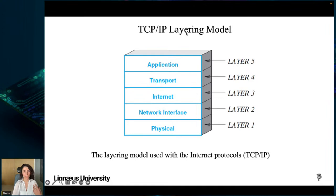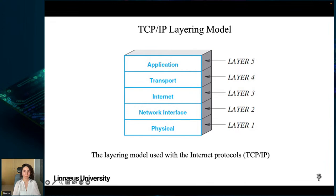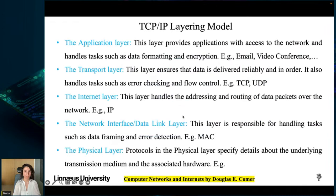The TCP/IP layer model consists of five layers, though layers 1 and 2 are often merged, making it four. At the top is the application layer (layer 5), then the transport layer (layer 4), the internet layer (layer 3), the network interface or data link layer (layer 2), and the physical layer (layer 1). The network interface layer is also called the data link layer — or MAC layer, since MAC is a key protocol of that layer.